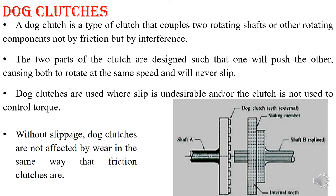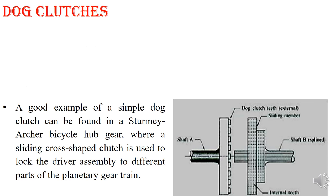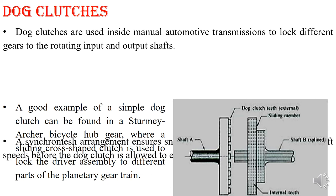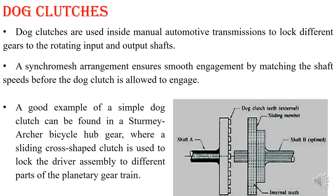This is the first type of dry clutch — the dog clutch. An example of dog clutches can be found in the Sturmey-Archer bicycle, where sliding cross-shaped clutches are used to lock the driver assembly to different parts of the planetary gear line.